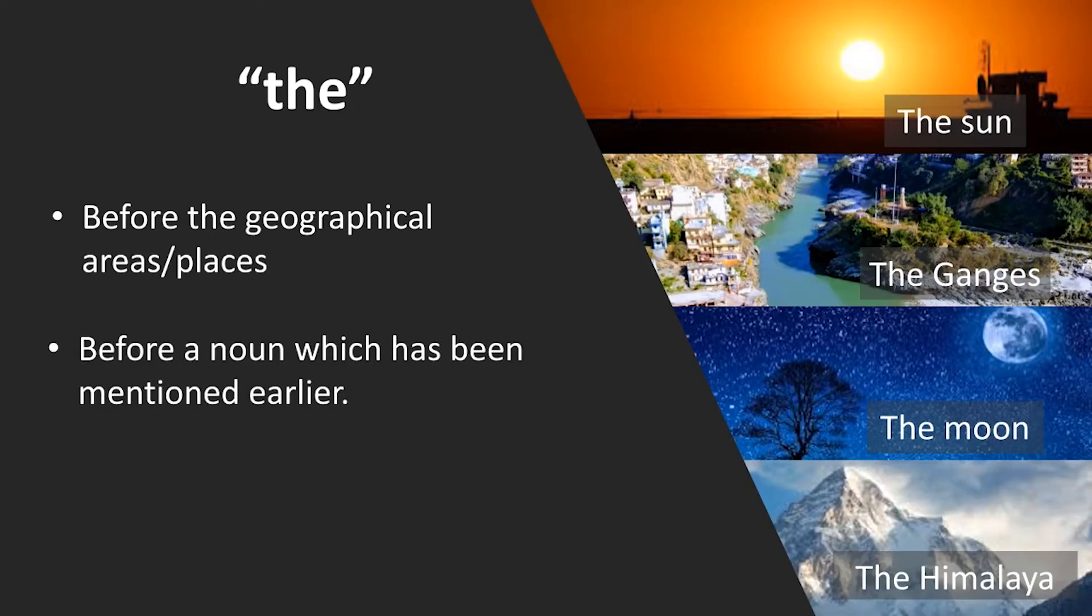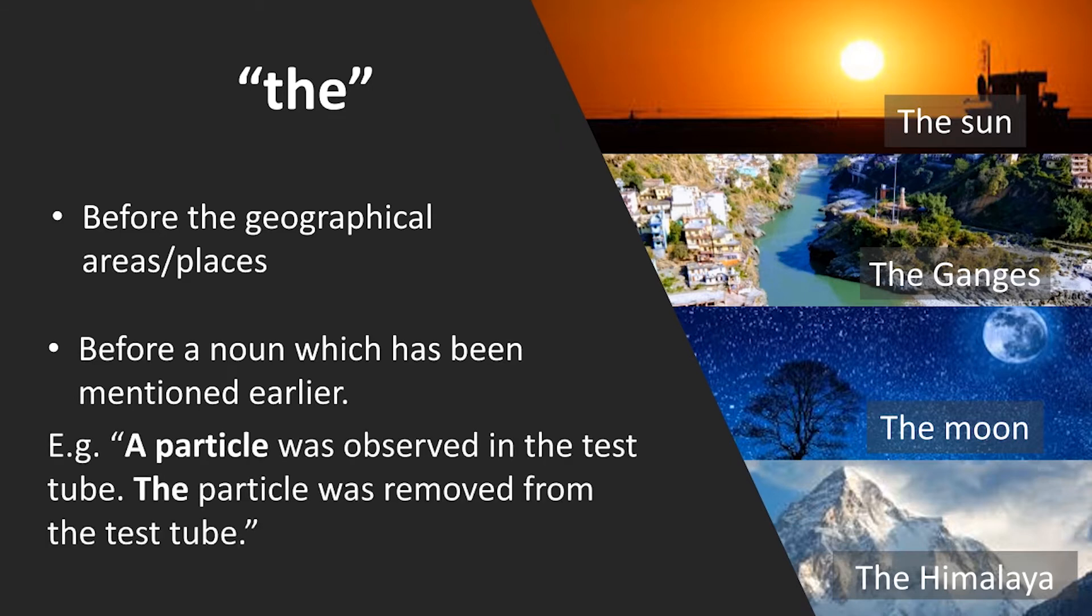Use 'the' before a noun which has been mentioned earlier. For example: 'A particle was observed in the test tube.' That is the first sentence. Second sentence: 'The particle was removed from the test tube.' Which particle are we talking about? The one discussed in the previous sentence. So 'the' refers to a noun that has been addressed in the previous sentence.